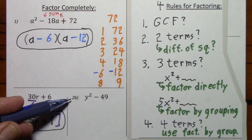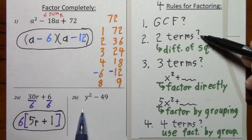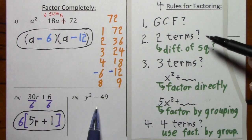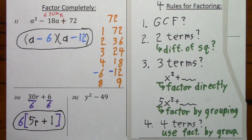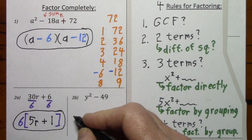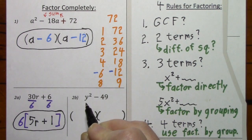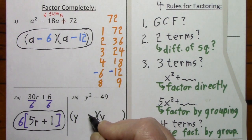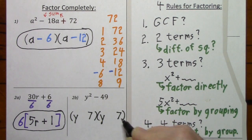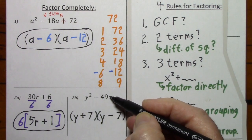Looking at 2b and referring to the rules: do you have a GCF? No. Do you have two terms? Yes. Is this a difference of squares? It's a difference of perfect squares, which means you can factor this polynomial — we can also call it a binomial. For a difference of squares, give yourself two sets of parentheses. The square root of y squared is y, the square root of 49 is 7. You make one positive, one negative, and here's the factored form.